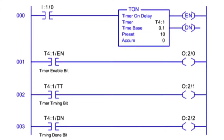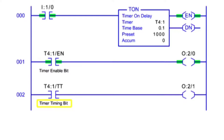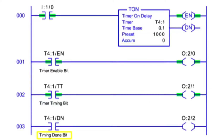For timer instructions, three control bits are available for programming use. The Timer Enable Bit status is true when the timer instruction is true. The Timer Timing Bit status is true when the timer is timing and the accumulated value is changing. The Timer Done Bit status is true when the accumulated value meets the preset value.